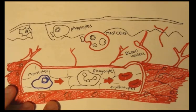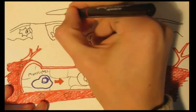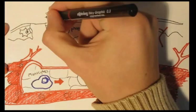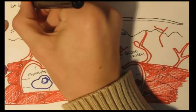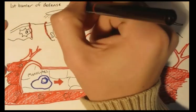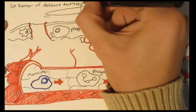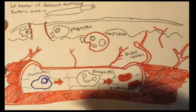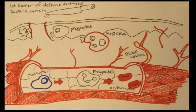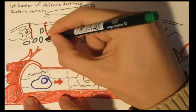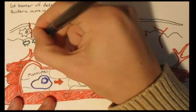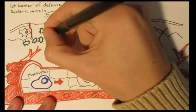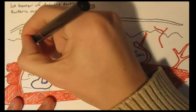The inflammatory response begins, for example, with an injury to the body — in this case, injury from a knife — which has successfully passed through the first line of defense, which was the skin and hair. This opening causes pathogens to infiltrate the body. For now the pathogens are bacteria, which have specific antigens on their surfaces.